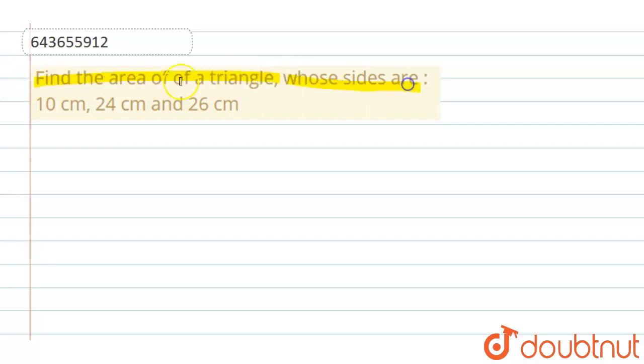a triangle whose sides are 10 centimeter, 24 centimeter, and 26 centimeter. To find the area of the triangle, we'll use Heron's formula. Let a = 10 centimeter, b = 24 centimeter, and c = 26 centimeter.